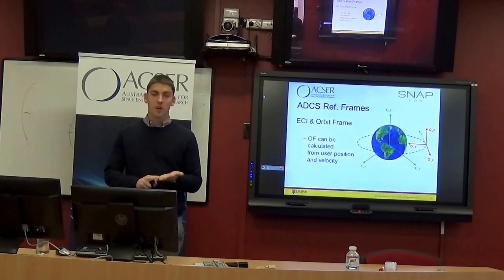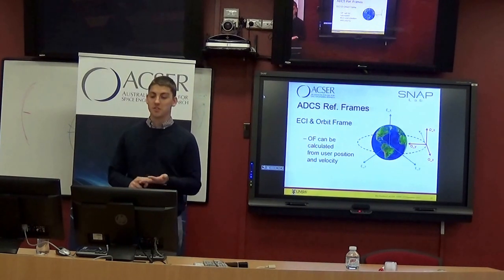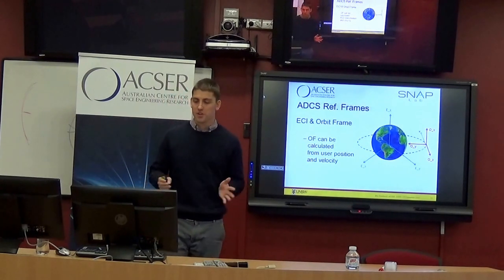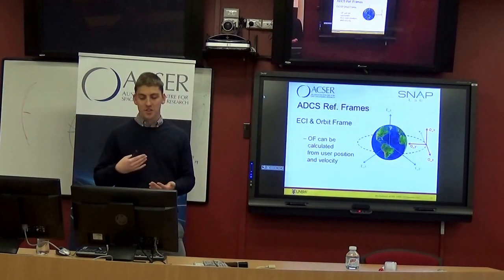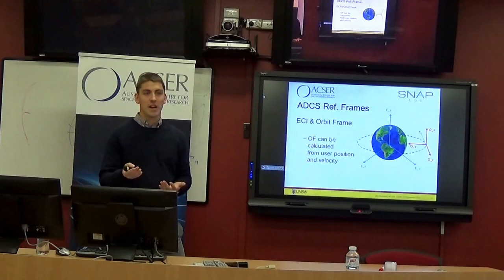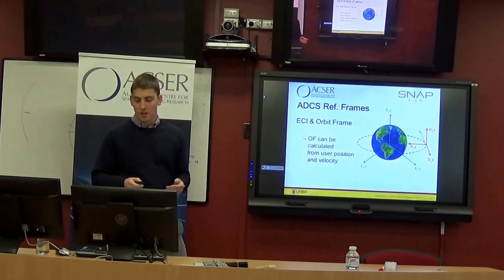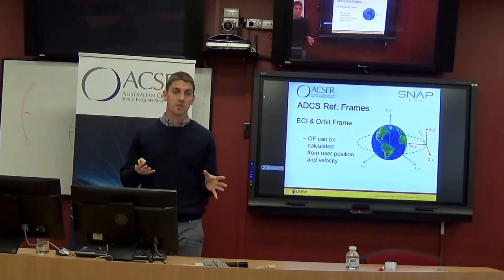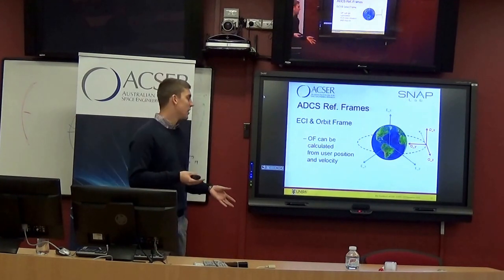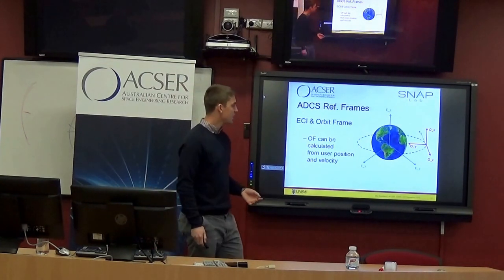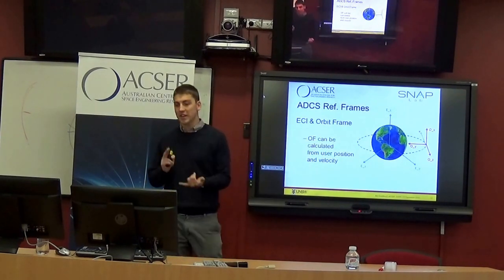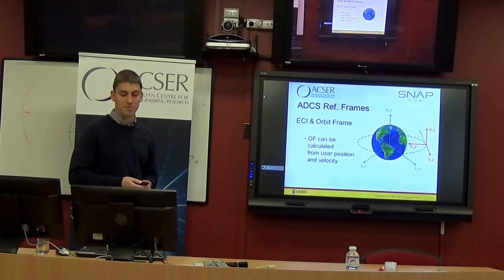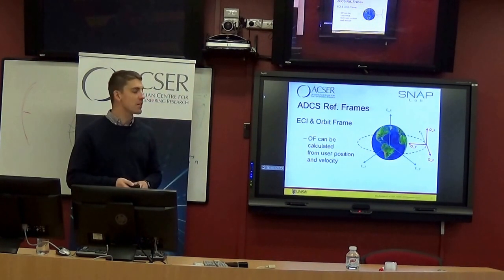Looking at the two other main reference frames for attitude determination: the inertial frame uses the standard ECI definition. The orbit frame is defined so that sending an attitude reference of zero causes ECO to align with the INMS pointing in the ram direction and all nadir instruments facing Earth. The orbit frame can be directly calculated from position and velocity in the circular model, making it straightforward to define and compute in real time.